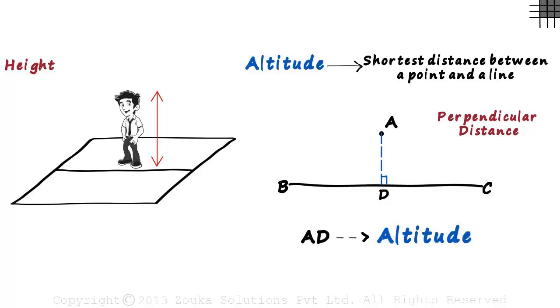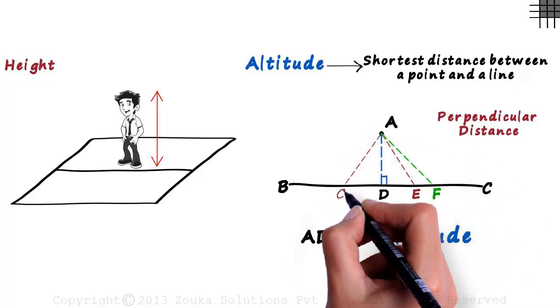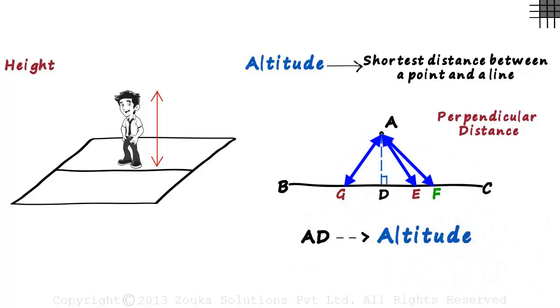If we draw three random lines from point A to E, F, and G, we should notice that all three lengths are greater than the altitude AD. AE, AF, and AG—all three lengths are greater than length AD.